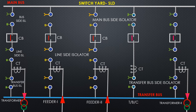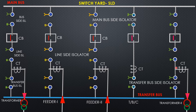This is the view of a switchyard consisting of five number of bays, shown through a single line diagram (SLD). Each bay contains a bus side isolator, line side isolator, and transfer bus side isolator. These are the main bus, transfer bus, and CT transformer. Normally power is drawn to the main bus and sent to the transformer of the substation, or may be sent to another substation.